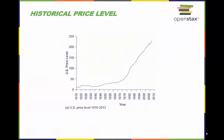The US price level rose relatively little over the first half of the twentieth century, as seen in this graph, but has increased more substantially in recent decades. The upward slope of the price level was especially steep in the 1970s, which reflects the high rate of inflation in that decade.